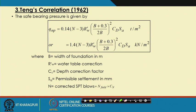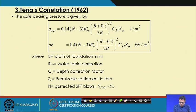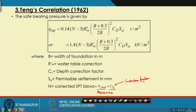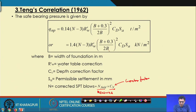Another correlation is given by Teng in 1962, where N is the corrected value and N-field is the measured value. CN is the correction factor, so N = CN × N-field. CD is the depth correction factor, Sa is the permissible settlement in millimeters, and N is the corrected SPT value. One equation gives the result in tons per meter square and the other in kilonewtons per meter square.